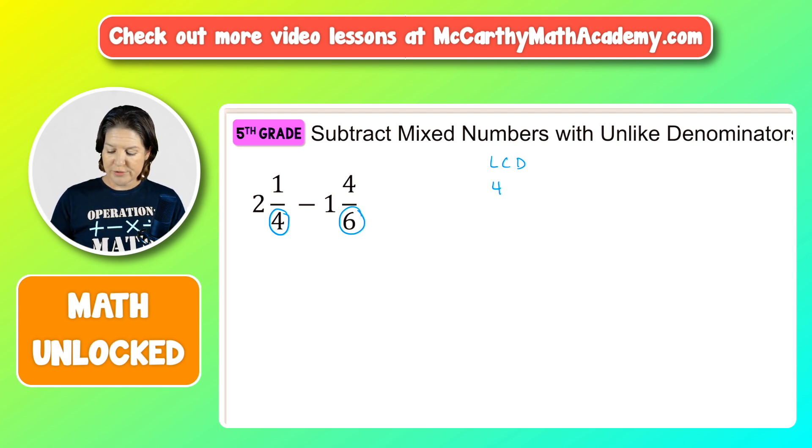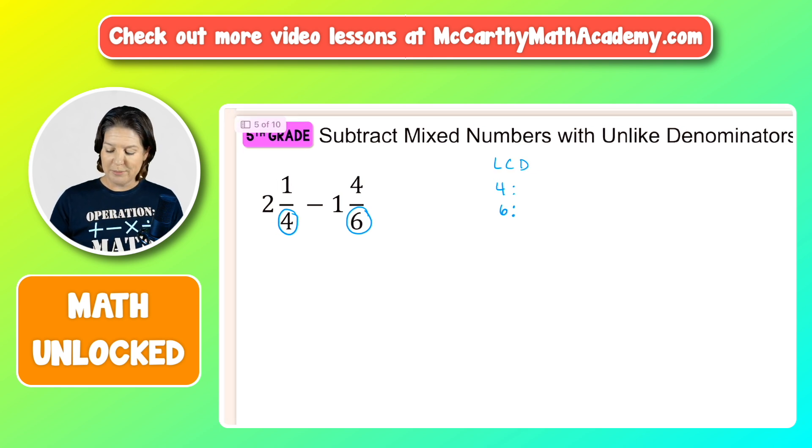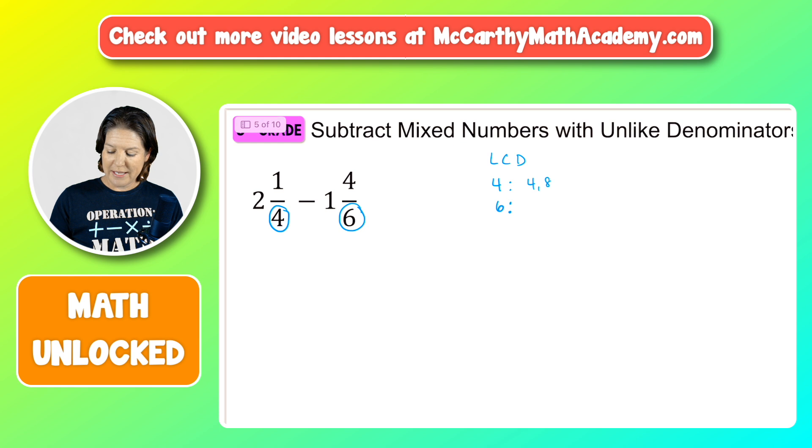To do that, we will skip count by our denominators until we find a matching value. So for the fours, I'll use my four song from the multiplication mashup. We've got 4, 8, 12, 16, 20, 24, 28. Let's stop there. Let's see if we have a match.